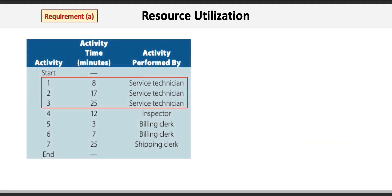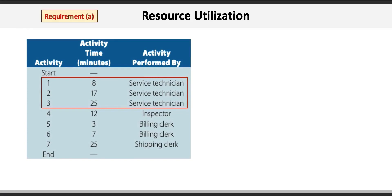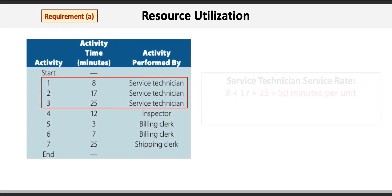The service technician's service rate is simply the sum of all the activity times, so 8 plus 17 plus 25 equals 50 minutes per unit. We can then translate this to a service rate per hour by taking 60 minutes in an hour and dividing by the rate of 50 minutes per unit to get a service rate of 1.2 units per hour.